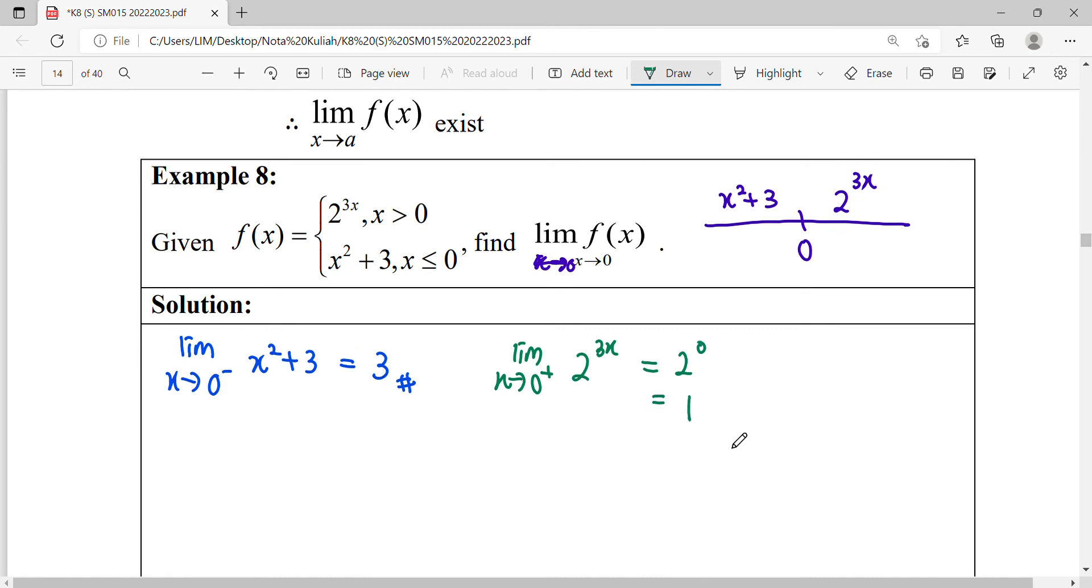Do you notice the left-hand side limit and right-hand side limit are not equal to each other? So this means that the limit at the point does not exist. So we can answer this question—find the limit at the point. We give out our reason first: Since...